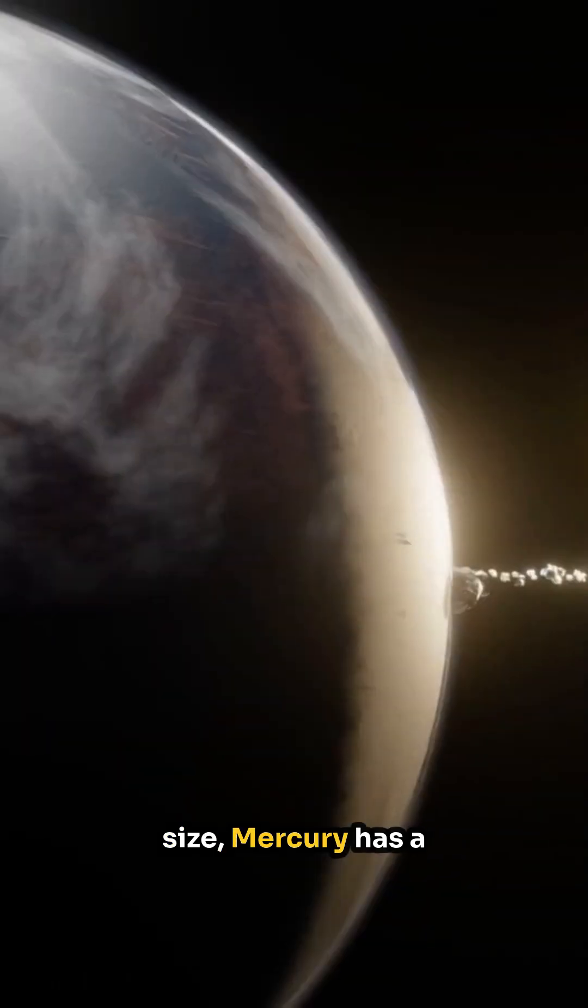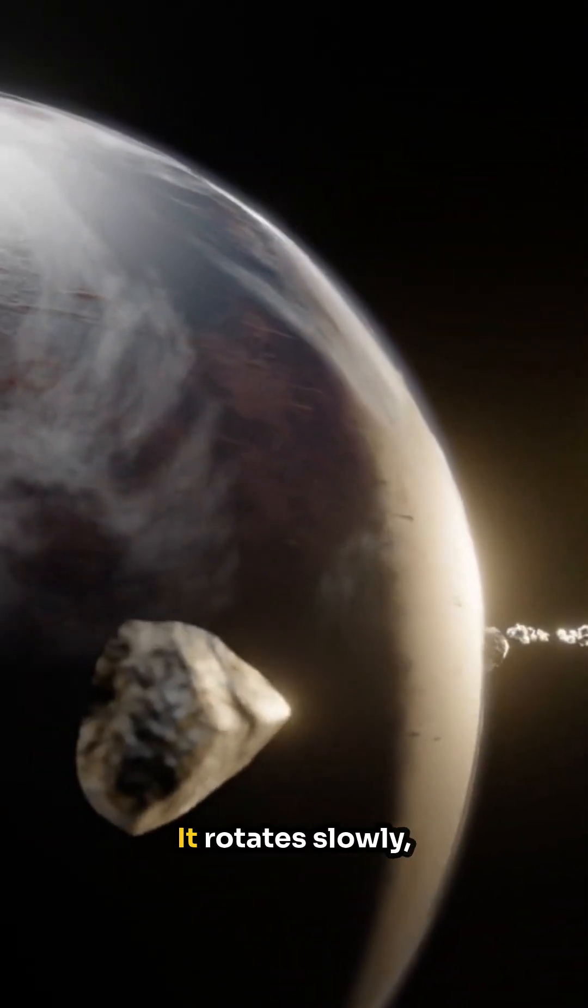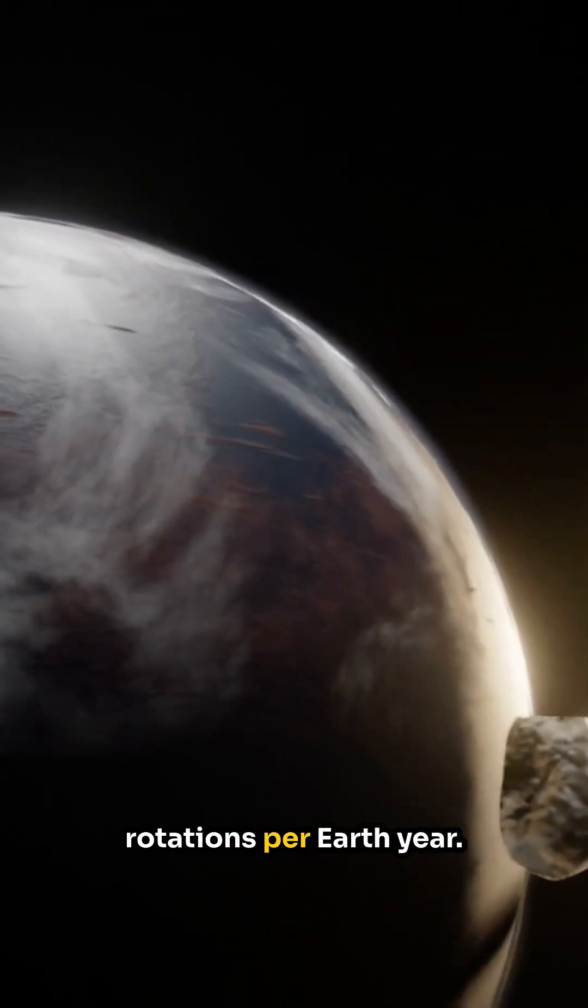Despite its small size, Mercury has a weak magnetic field. It rotates slowly, completing only 59 rotations per Earth year.